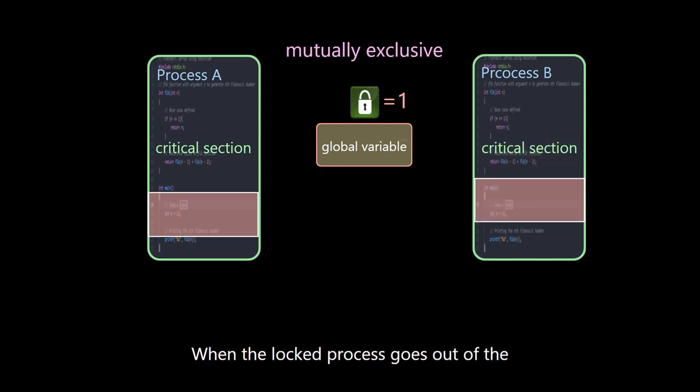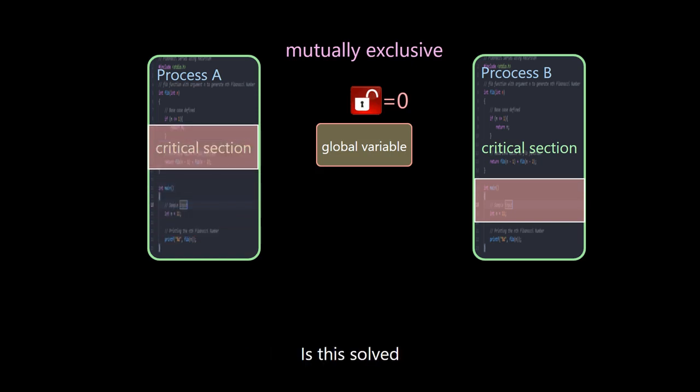When the locked process goes out of the critical section, it unlocks and changes the value to 0, allowing process A to visit. Is this solved?